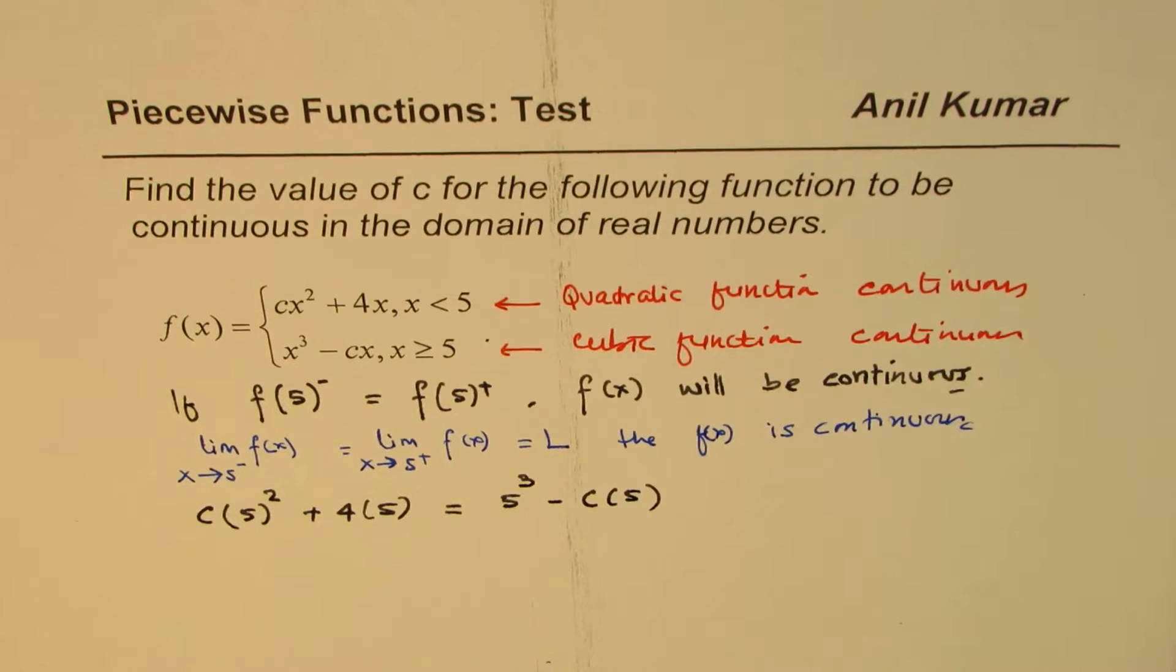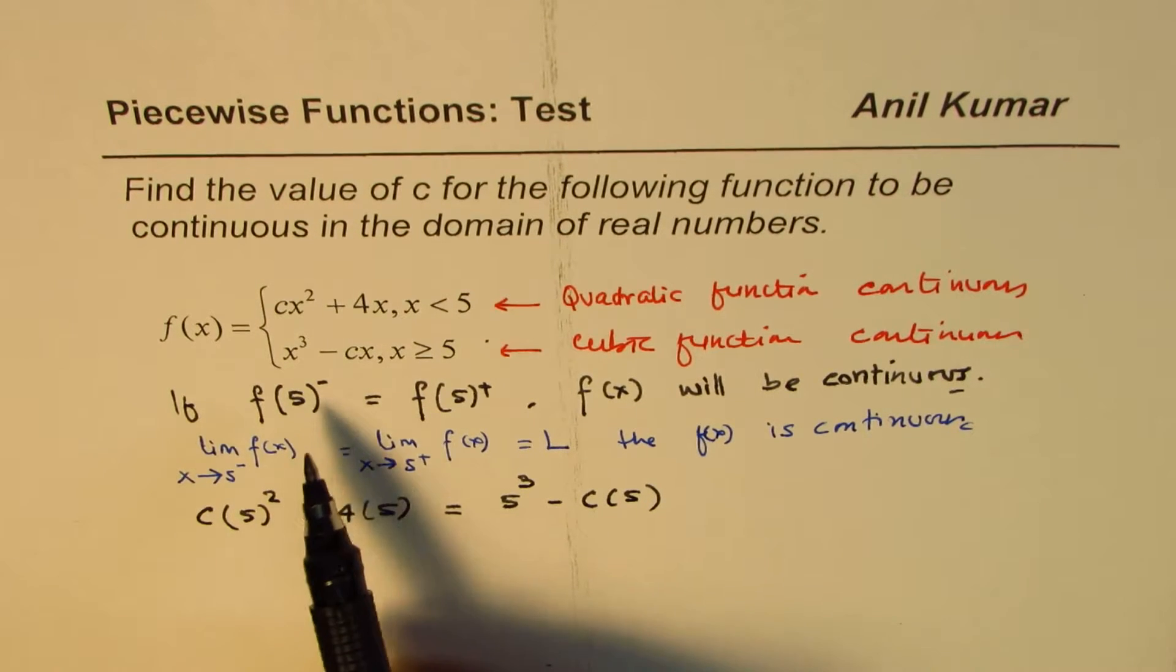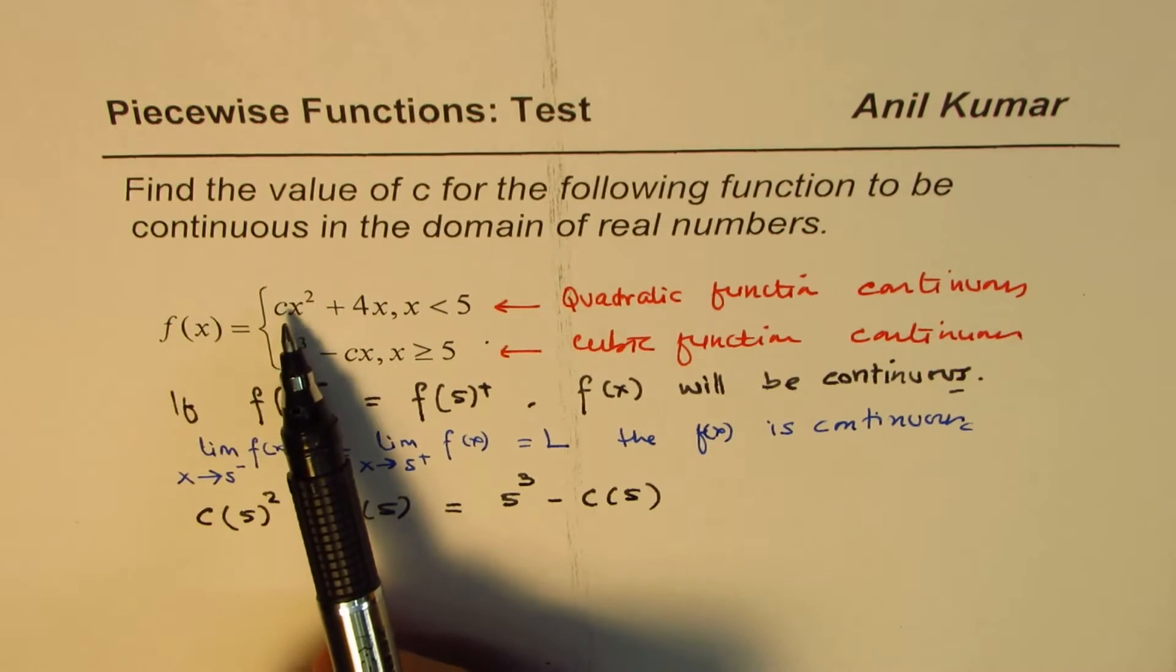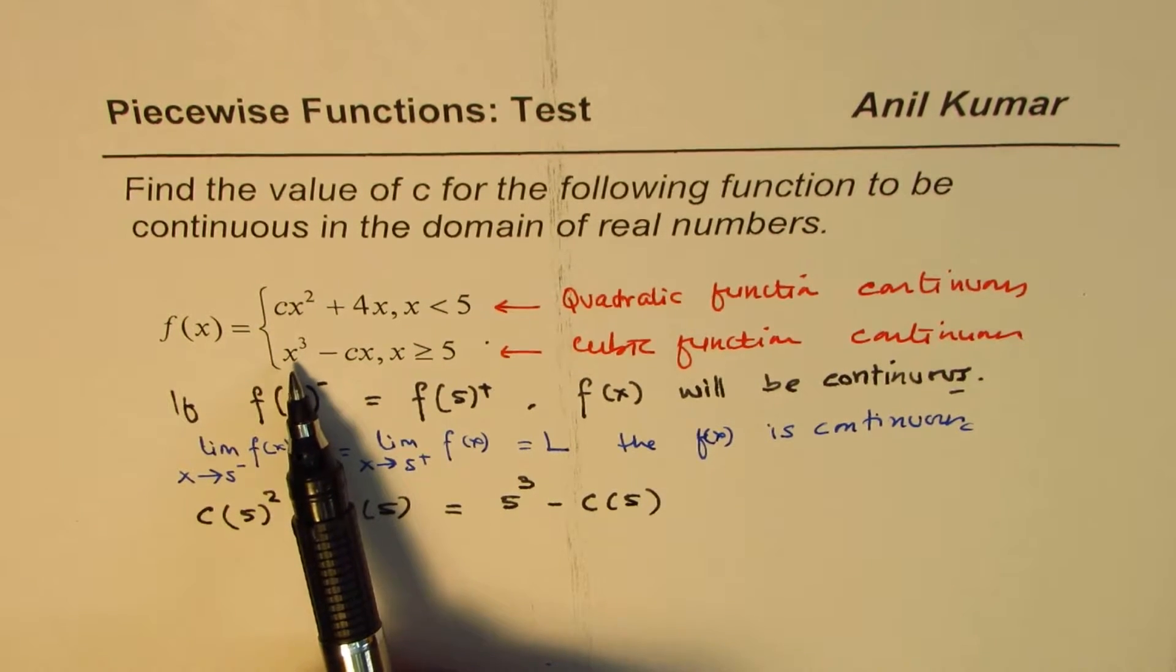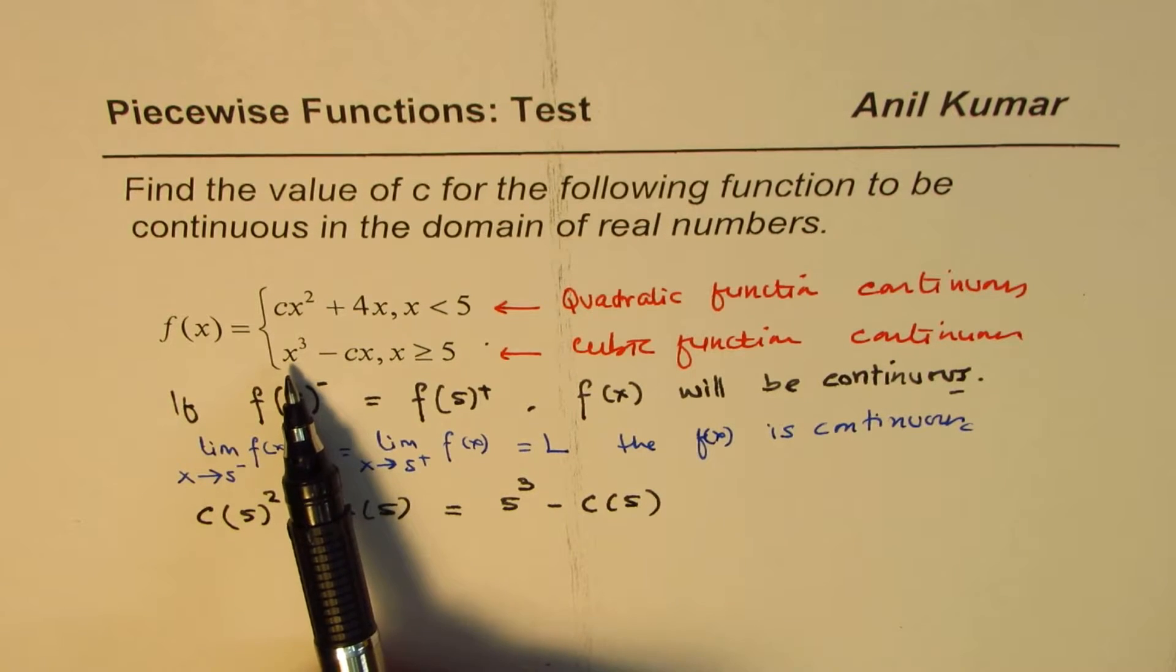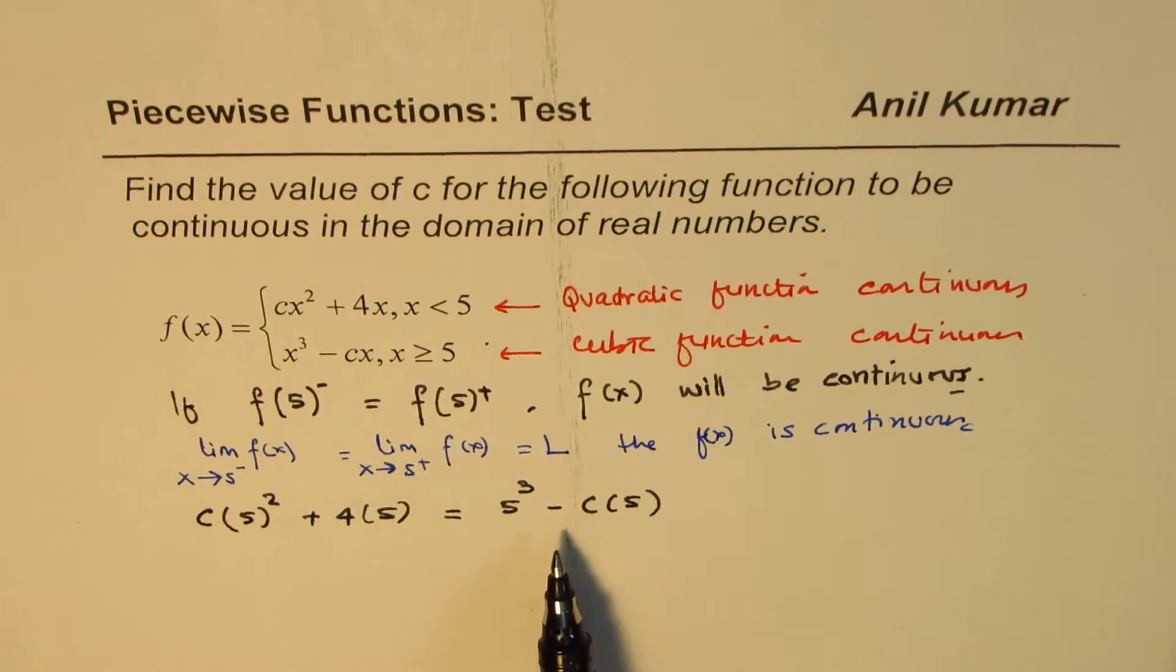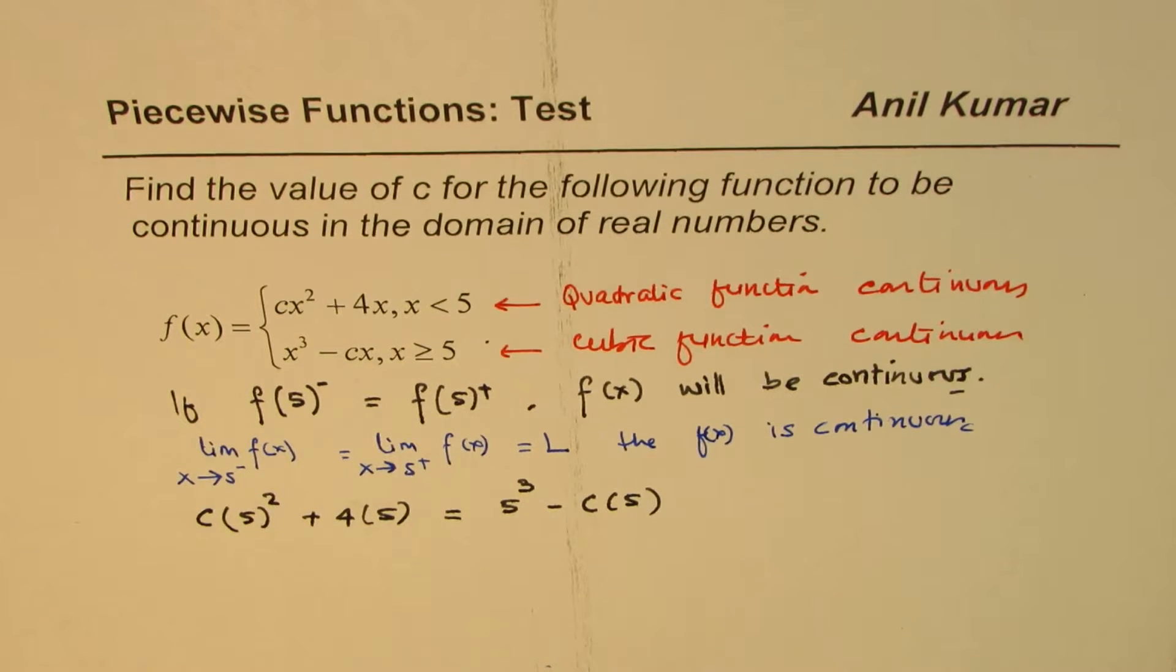So that is what we get. When you approach from the left side, you're on the top branch, which is the quadratic function. From the right side, you're on this branch, which is cubic. And both should be at the same point at 5 for making them continuous. I hope that is clear.